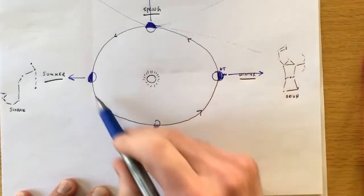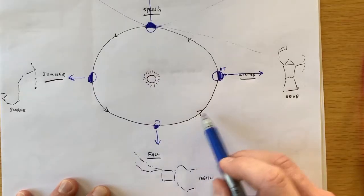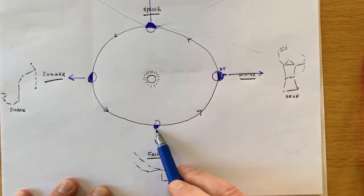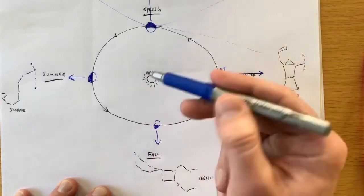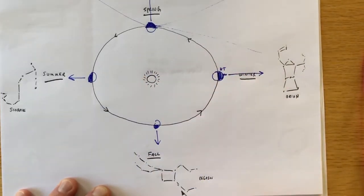So as the Earth revolves around the Sun, or orbits around the Sun, the dark side of the Earth, or the night sky, faces different directions in space. And I know this will be a shocker for you, but when you look different directions in space, you see different constellations.